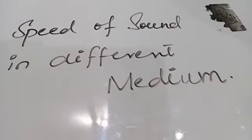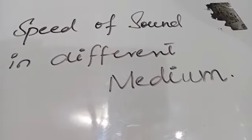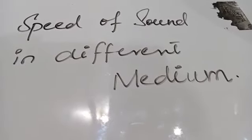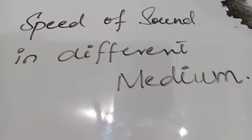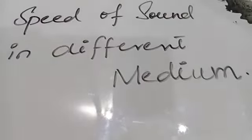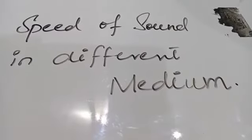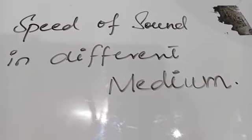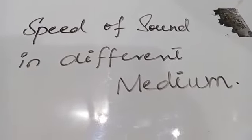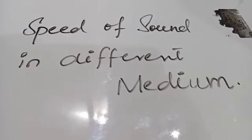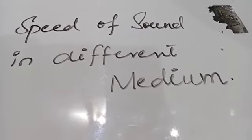In solids, particles are closely packed. In liquids, the distance between particles is larger. In gases, the distance between particles is very large. Sound cannot pass through a vacuum because there are no particles present. Sound requires a material medium. In general, the speed of sound in a liquid is five times that in gases, and the speed of sound in a solid is about 15 times that in gases because atoms and molecules are closely packed.